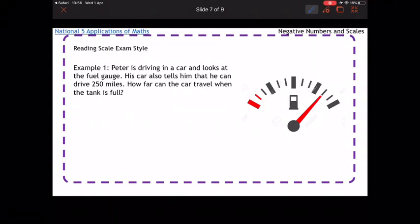Okay, so exam style reading questions. We've got this gauge here, and we're going to have to figure out how far the car can travel when it's full if this amount means it can drive 250 miles. So firstly, let's just count how many spaces there are, and there's 12 in total.